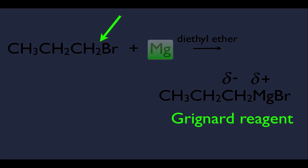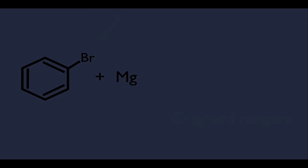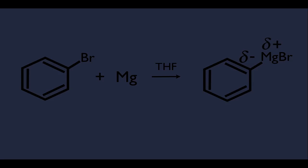What we made was an alkyl Grignard reagent, but it's not limited to just that — just like with organolithium, we can do it with benzene rings as well. Using a different solvent like THF instead of diethyl ether, we can make a Grignard from a benzene ring with a halide and Mg. All you're doing is sandwiching the Mg between the carbon and the Br. Because Mg is connected to that carbon, the carbon is partially negative, Mg is partially positive, and we've made that carbon in the benzene ring nucleophilic.